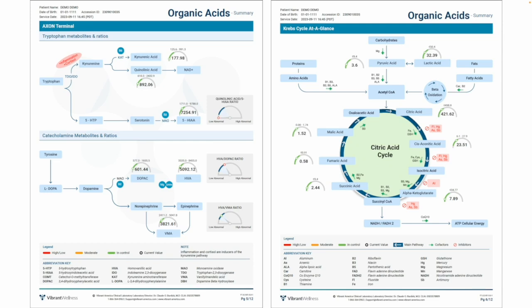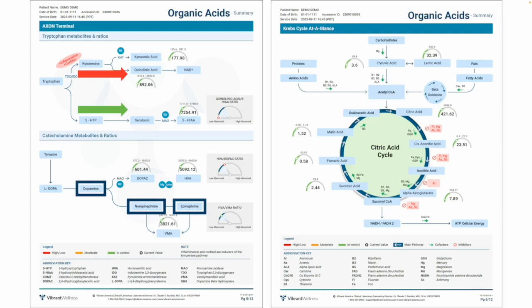The summary also includes three flow charts. The upper left shows tryptophan metabolites and ratios. During times of stress with elevated cortisol and inflammation, tryptophan is metabolized down the kynurenine pathway; otherwise, tryptophan is used to make 5-HTP and serotonin. The lower left shows tyrosine, an amino acid that serves as a precursor to the catecholamine neurotransmitters dopamine, epinephrine, and norepinephrine. On the right is the Krebs cycle, also known as the citric acid cycle or TCA cycle, a great tool for identifying nutrient deficiencies or heavy metal toxicities blocking the flow in your metabolism.